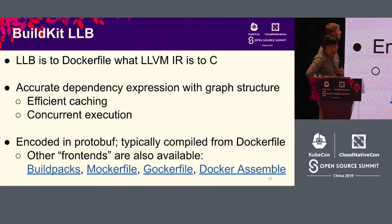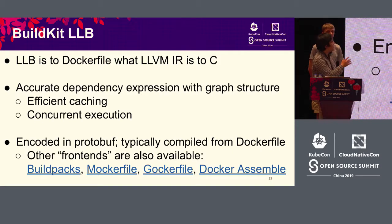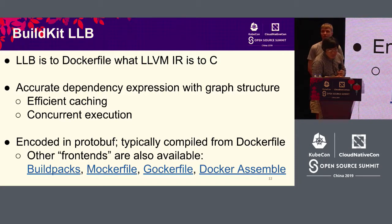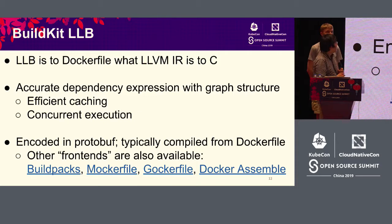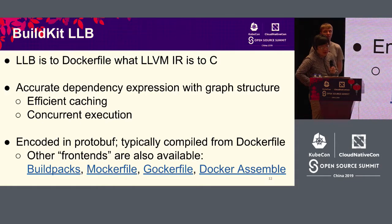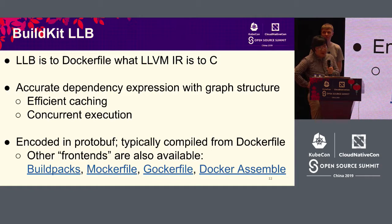BuildKit can analyze dependencies accurately by using LLB, a new low-level format for building images. LLB has a graph structure, so we can analyze dependencies accurately, do efficient caching, and also do concurrent execution for multi-stage Dockerfiles. LLB is not for humans — it's for machines. It's encoded in Protocol Buffers, and LLB is typically compiled from human-readable languages such as Dockerfile.